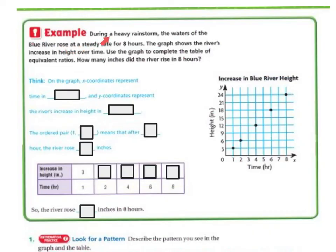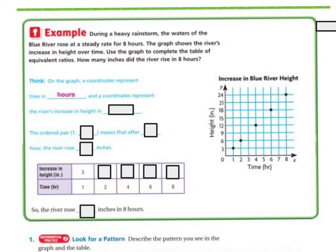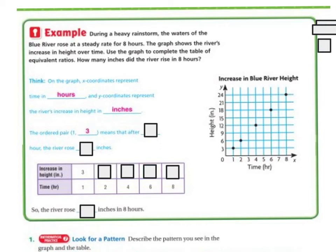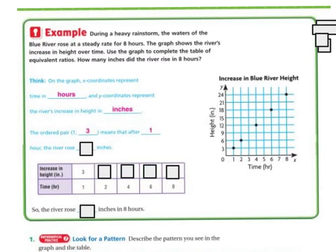Let's do another example. During a heavy rainstorm, the waters of the Blue River rose at a steady rate for 8 hours. The graph shows the river's increase in height over time. Use the graph to complete the table of equivalent ratios. The x-coordinate represents time in hours, and the y-coordinate represents the river's increased height in inches. The ordered pair (1, 3) means that after 1 hour, the river rose 3 inches — over 1, up 3.